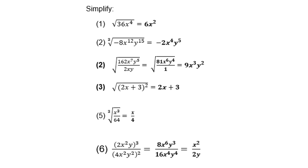Then for 162x to the power 7 y to the power 5 over 2xy, please first simplify the fraction before you find the square root. After simplifying, you get 9x cubed y squared, and then you find the square root.